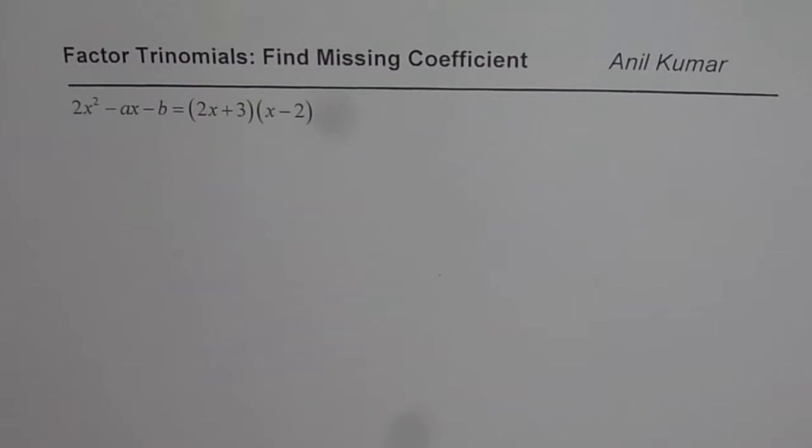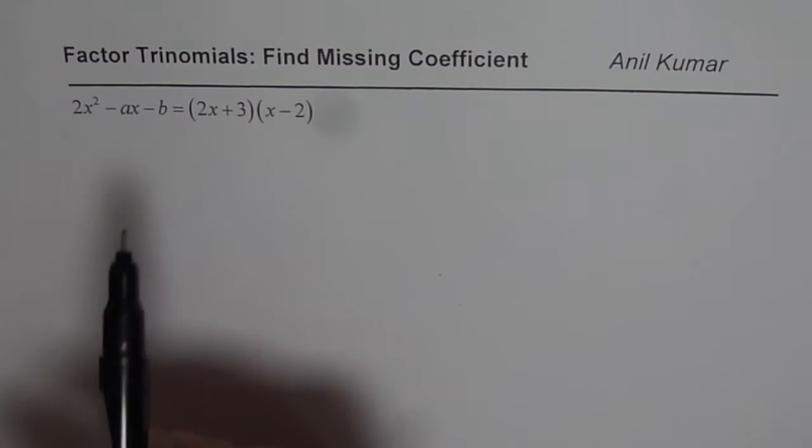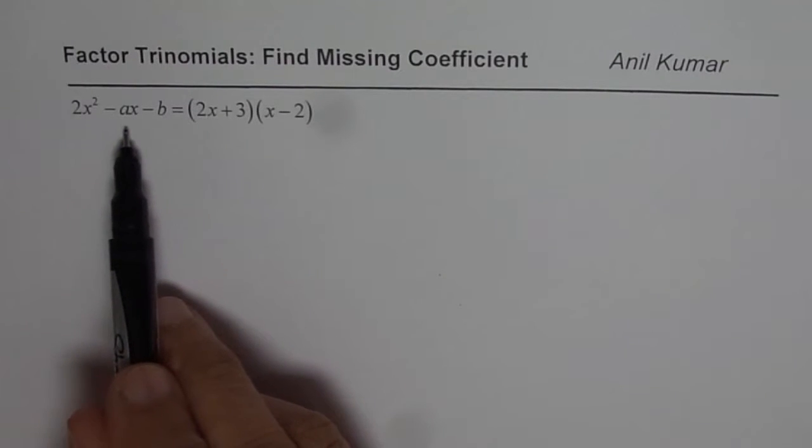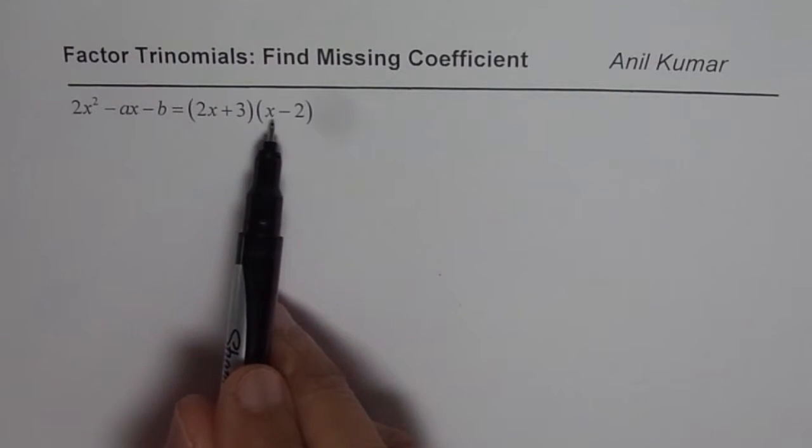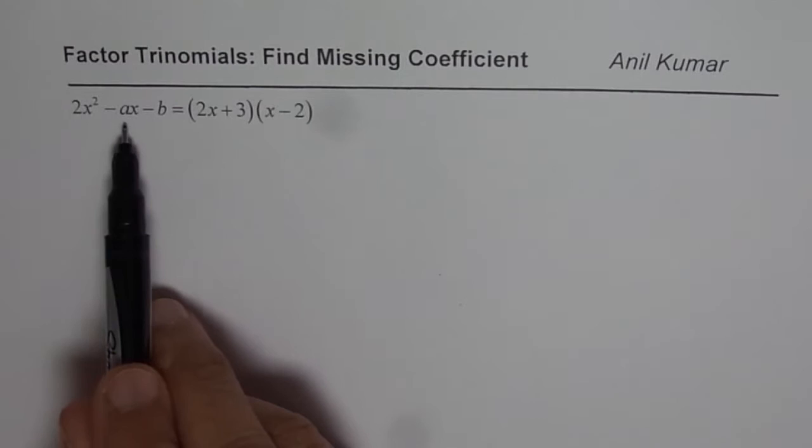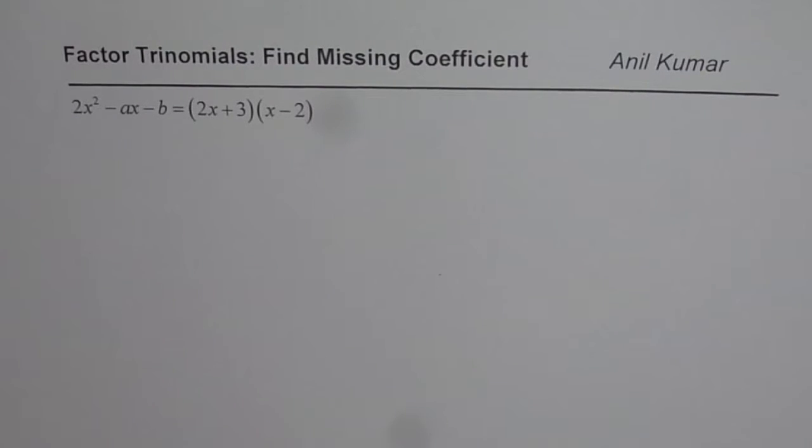I'm Anil Kumar and in this video we'll factor trinomials. In fact, we'll find the missing coefficients. The question is: 2x² - ax - b = (2x + 3)(x - 2). We need to find what values of a and b are.